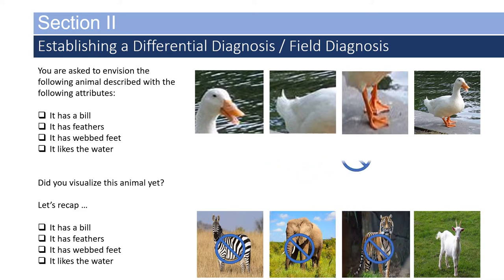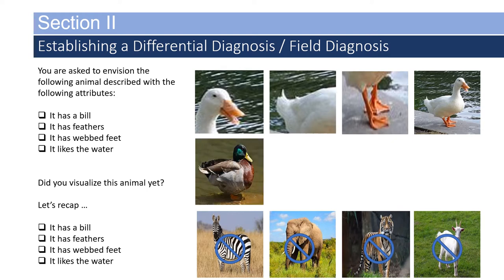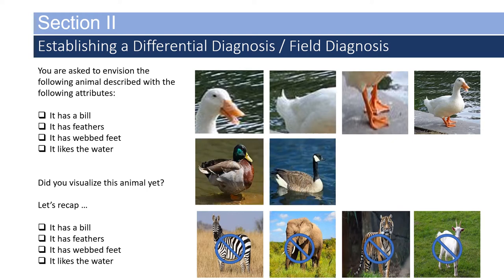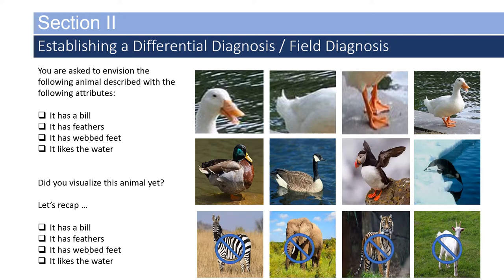Creating a differential diagnosis means that you need to be in the ballpark. If you guessed a duck, a Canadian goose, a puffin, or even a penguin, you're within the arena — within the ballpark of what it could be based on the fact pattern available to you at the moment.